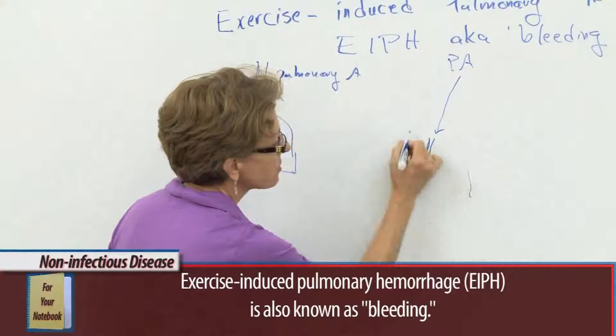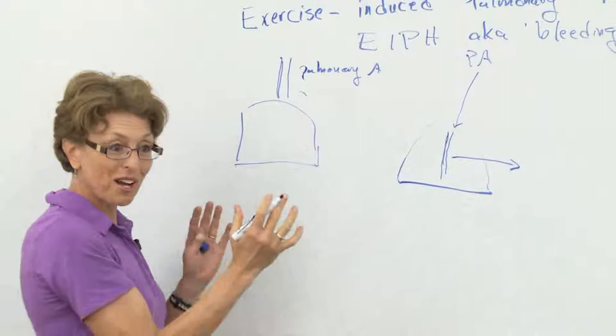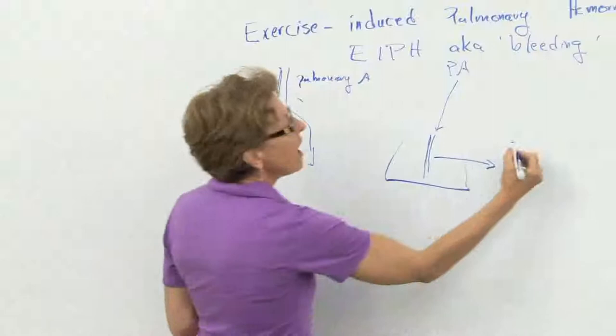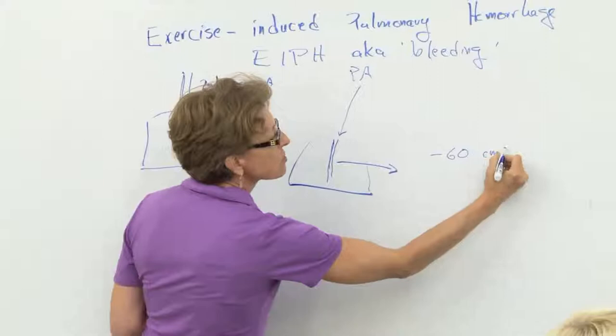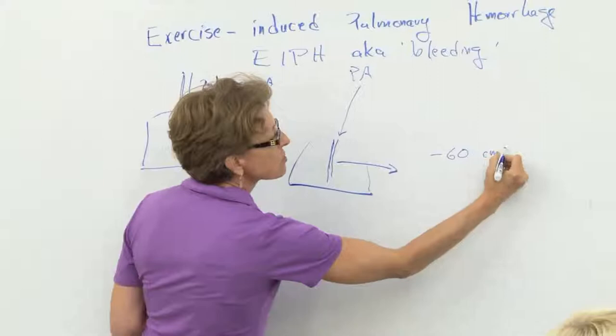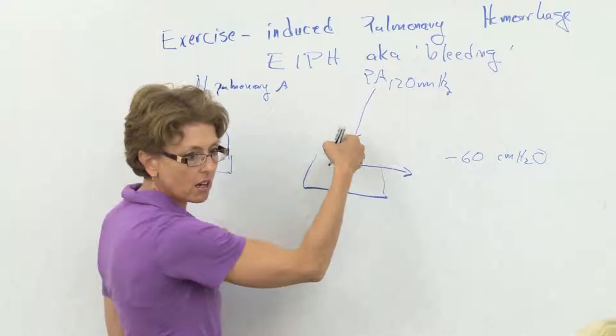So when horses are running, horses are stunning athletes. They make us look so pitiful. When horses are running, they might experience minus 60 or so centimeters of water pressure opening up the lung. And they've got about 120 or so millimeters of mercury pressure pushing down into the lung. And so those add up, and so there's this tremendous force against the capillary, and the blood starts to leak out.